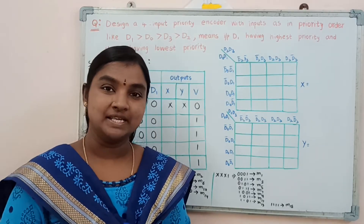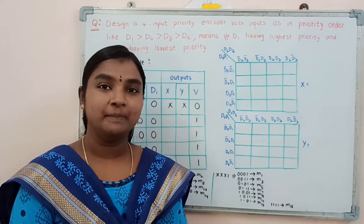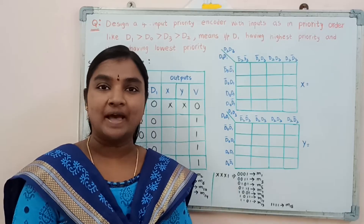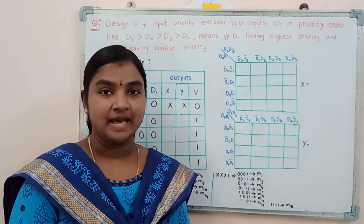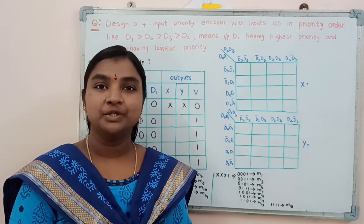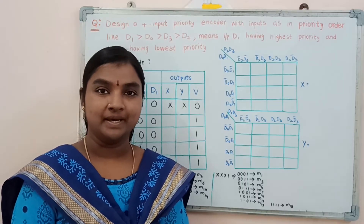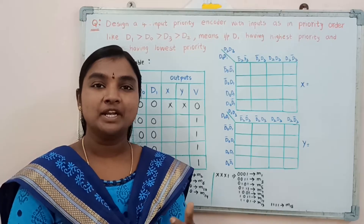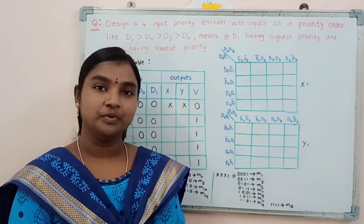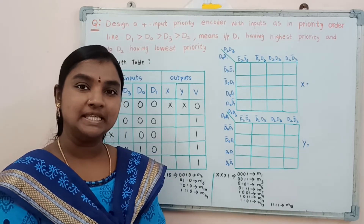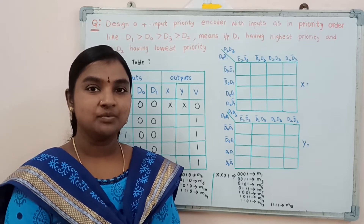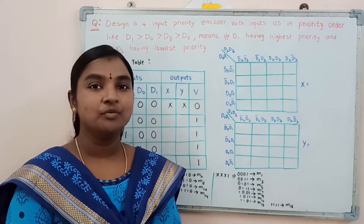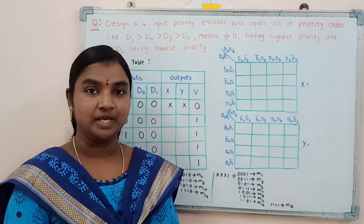In the last video, I explained about the priority encoder circuit where the higher subscript input value has the higher priority compared to the lower subscript number. In that case, the higher subscript number binary code is written in the output. Now, considering this question, to simplify it we need to write the truth table for this 4-input priority encoder.